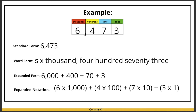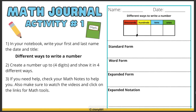Now let's do an activity in your journals. The first activity is 'different ways to write a number.' You will create a number up to four digits and write it in all four different forms. Make sure to pause the video and check back for any notes you might need.